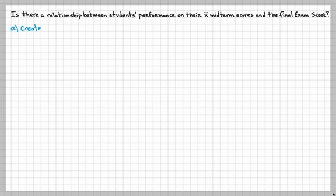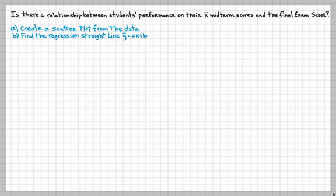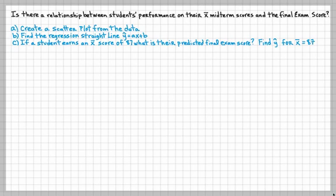To determine if there is a relationship in this video, we're going to create a scatter plot first. There's other ways to find relationships between two data points, one is through correlation coefficient, which is another video that you can watch. After we find out if there is a strong relationship, we want to find the regression straight line, ŷ = ax + b. That's going to help us determine an estimate of what y is when we know x. If a student earns an average score of 87, what is their predicted final exam score? Basically find ŷ for x̄ equals 87.